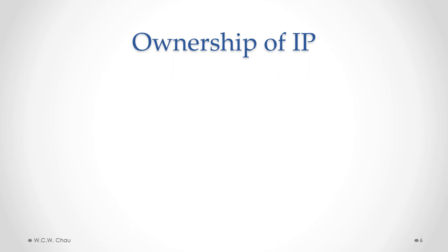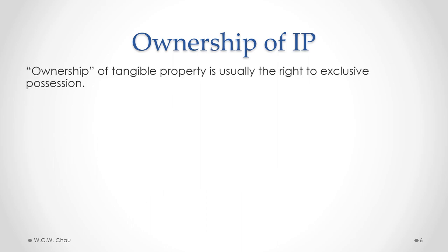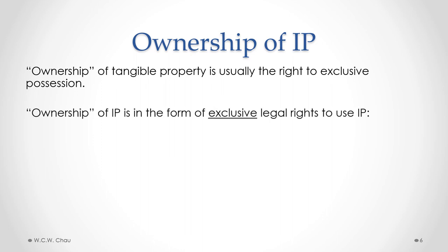Let's examine the concept of the ownership of IP. With tangible property, ownership usually means having the right to exclusive possession — meaning that if you are the owner, you have the right to possess it to the exclusion of all others. With IP, it's a little bit different because IP is intangible. If you are the owner of IP, it gives you a bundle of exclusive legal rights to use that IP, meaning that you can use it for yourself to the exclusion of other people. The three major types of IP that we will examine in this course are Copyright, Trademark, and Patent.